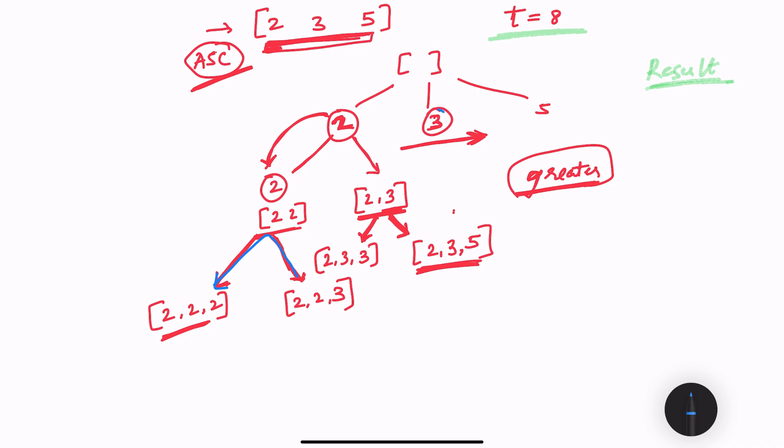Let's apply the same logic for 3. I'll just use this empty space over here. So for 3 the first, the left leg is going to be to add the same number, so I will have 3, 3, and the right side will have 3, the next value which is 5.